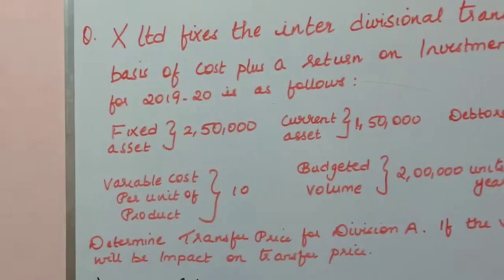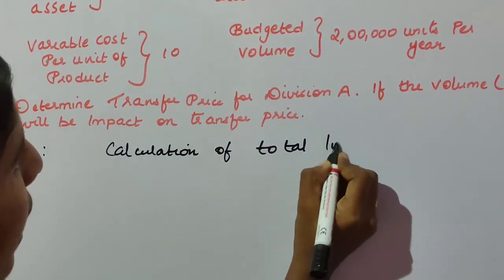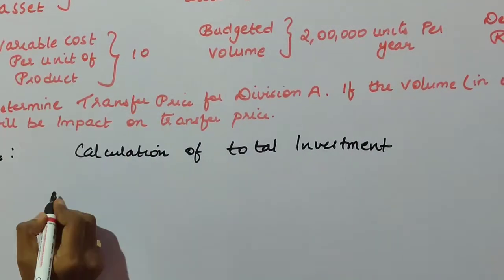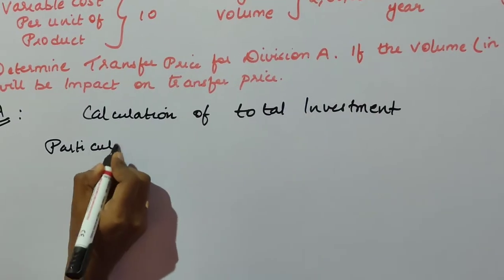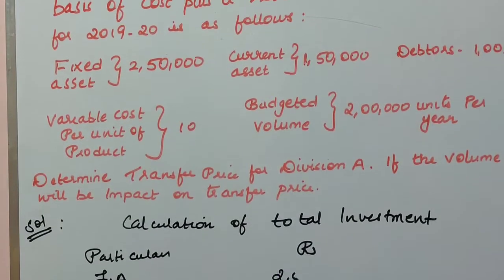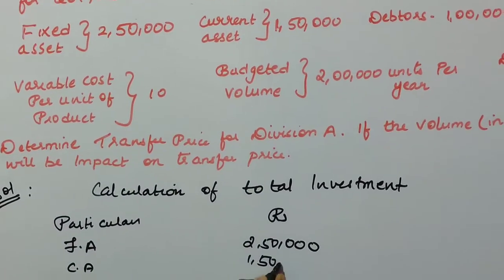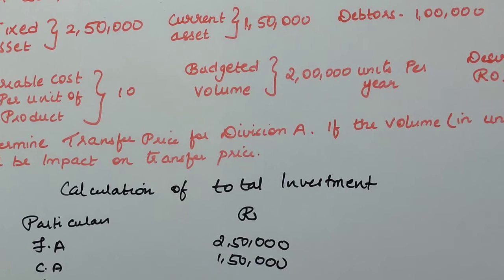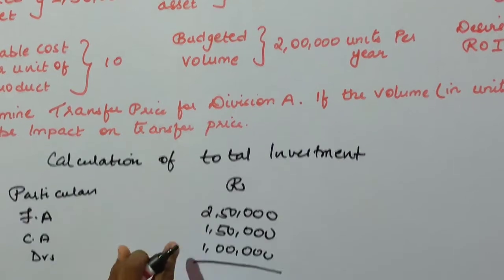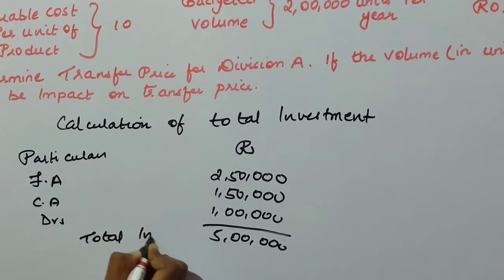Starting with the calculation of total investment. Fixed assets given in the question are ₹2,50,000. Current assets are ₹1,50,000. Debt is ₹1,00,000. No other assets to be included. Adding these gives a total investment of ₹5,00,000.